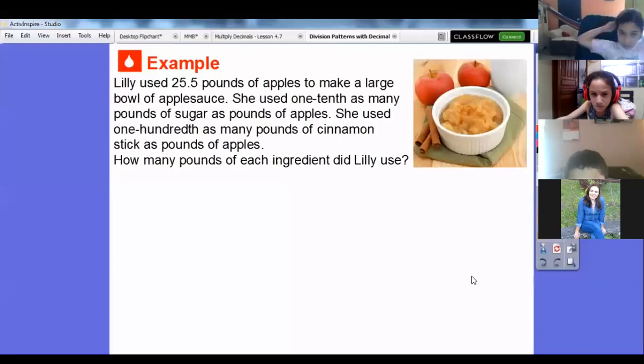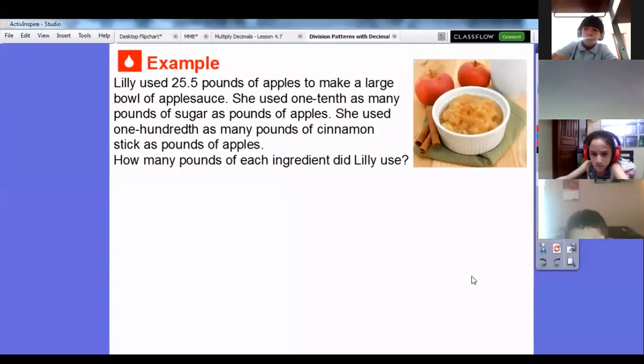A little connection here: dividing by 10 is the same as multiplying by one tenth or 0.1, or finding one tenth of a number. Here's another example: Lily used 25.5 pounds of apples to make a large bowl of applesauce. She used one tenth as many pounds of sugar as pounds of apples. She used one hundredth as many pounds of cinnamon sticks as pounds of apples.